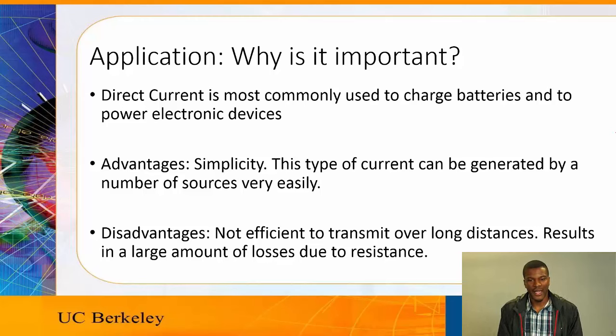The advantage of this is that it is pretty easy to make. This type of current can be generated by a number of sources very easily. The disadvantage of direct current is that it is not efficient at all to transmit over long distances. It results in a large amount of losses due to resistance.